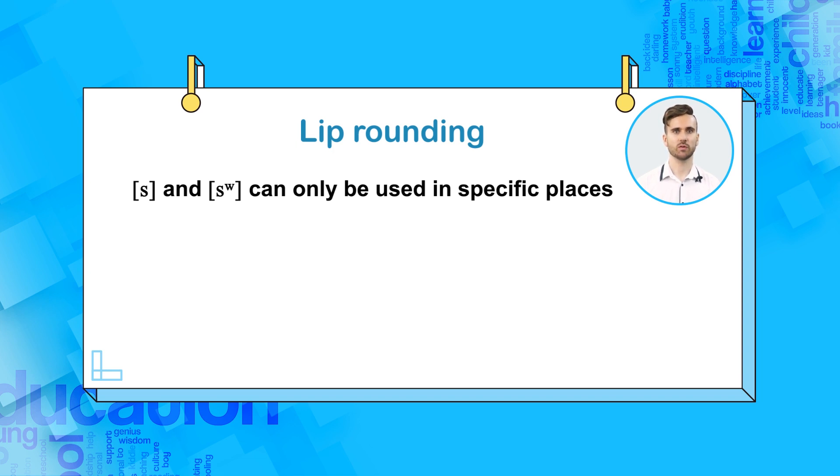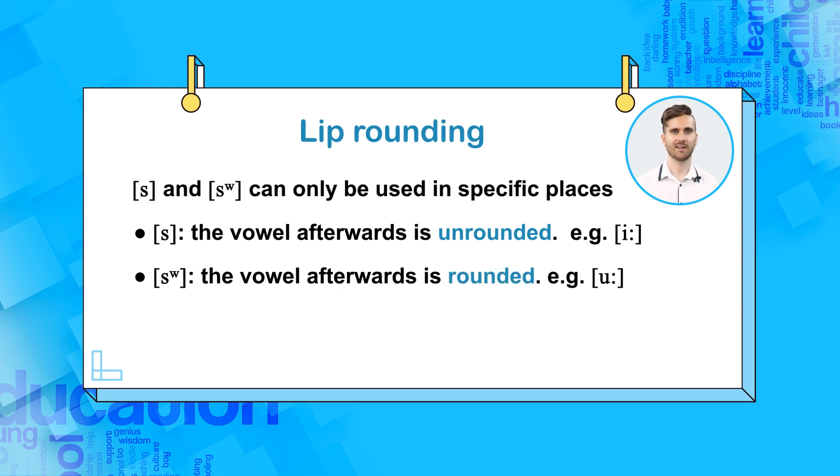Remember that the two allophones can only be used in specific places. Specifically, [s] can only be used when the vowel afterwards is unrounded. For example, [si]. And [sʷ] can only be used when the vowel afterwards is rounded. For example, [sʷu]. This also means that, more importantly, each allophone can never occur in the position or place of the other allophone. Therefore, [s] can never occur in soup, and [sʷ] can never occur in sea.